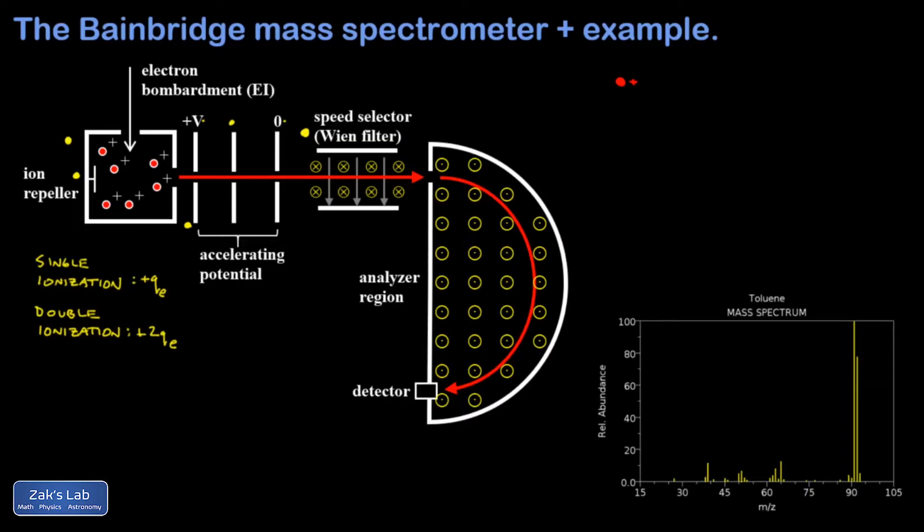If we zoom in on the Wien filter here, it has a downward electric field and an inward magnetic field. The downward electric field exerts a downward force on the positive particle. Then, using the right-hand rule for the magnetic force on a particle in this beam,